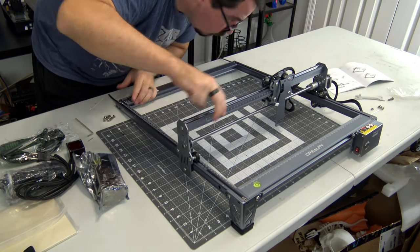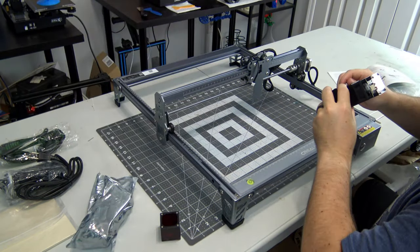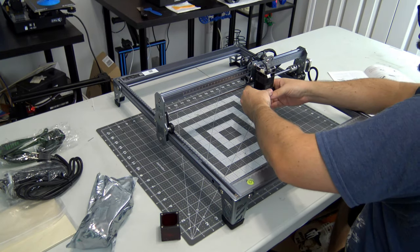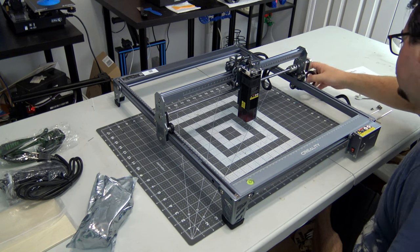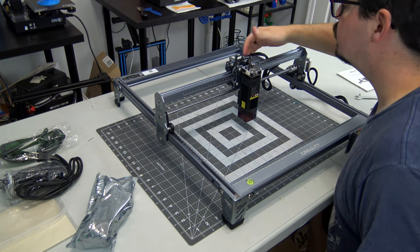As mentioned before, Creality provides a copy of Laser Gerbil and a trial version of Lightburn to control the laser. They provide configuration files for both, as well as a PDF reference for speeds and powers of common materials.